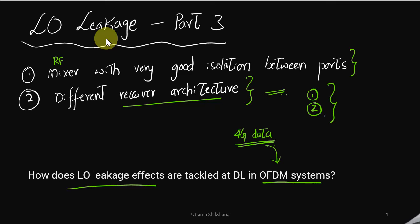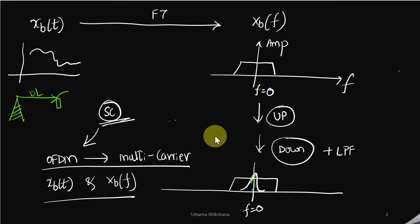Initially I had considered a single carrier system with the baseband time domain signal xb(t) whose spectrum is centered around DC. With up conversion and down conversion operations, we saw that at the receiver we were able to get back the baseband signal, but there was an unwanted DC component present at frequency zero.